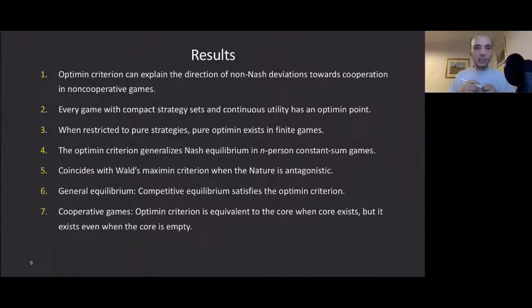Let me give you a preview of the results in the paper. First, I believe that the Optimin criterion is useful in explaining the direction of non-Nash deviations towards cooperation in non-cooperative games. Second, every game with compact strategy sets and continuous utility has an Optimin point. So in particular, for the existence of Optimin points, we don't require, for example, the convexity of strategy sets.